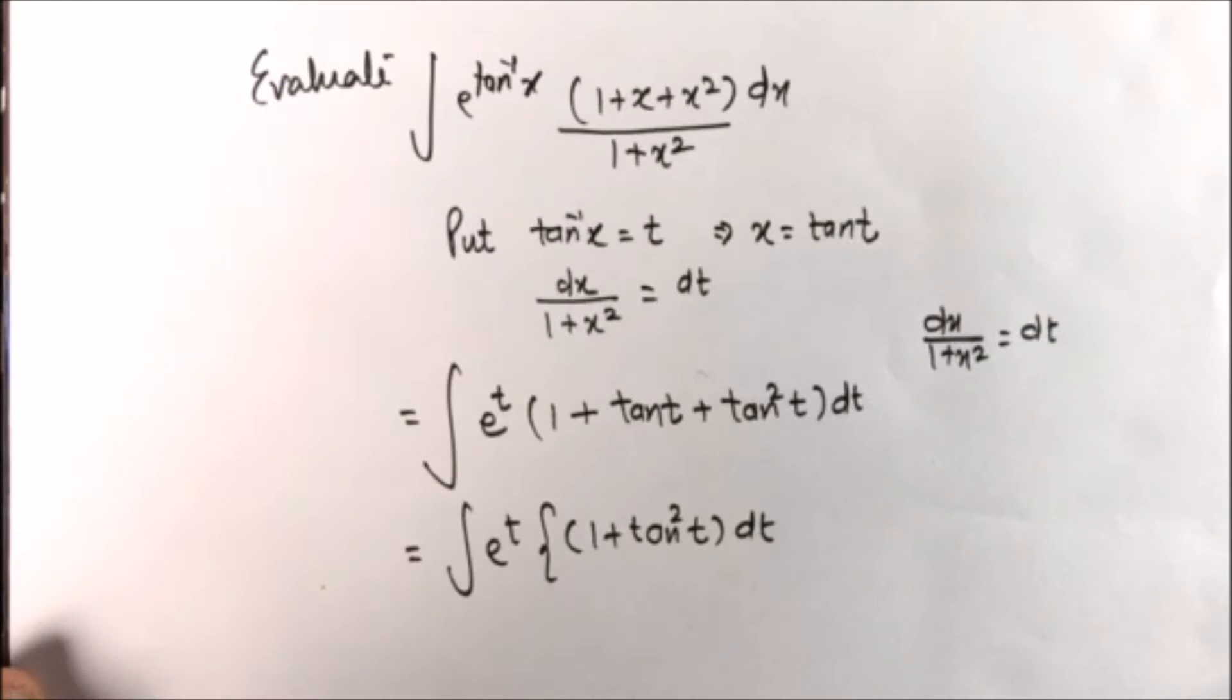Now the next thing is to collect 1 plus tan squared t. Why we are collecting 1 plus tan squared t?